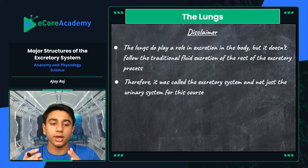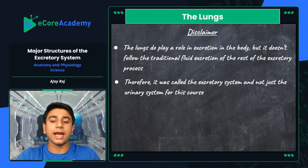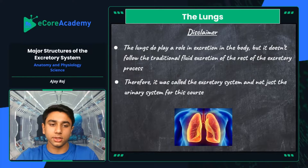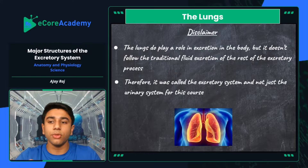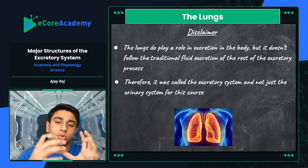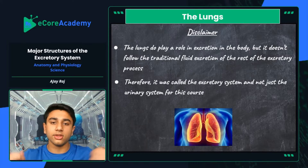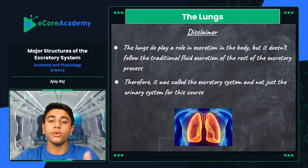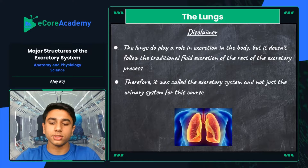This course is called the excretory system — and not just the urinary system — because we also wanted to include the lungs, which are scientifically proven to be part of the excretory system. However, the lungs are not attached to the rest of the urinary system, so we're mainly focusing on the urinary system within the excretory system. Every time you inhale, you inhale oxygen; every time you exhale, you release carbon dioxide. It's all about the filtration process and exchange of air.